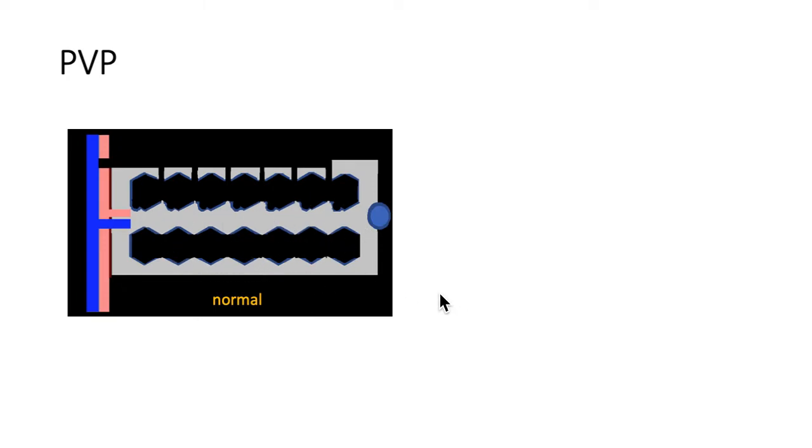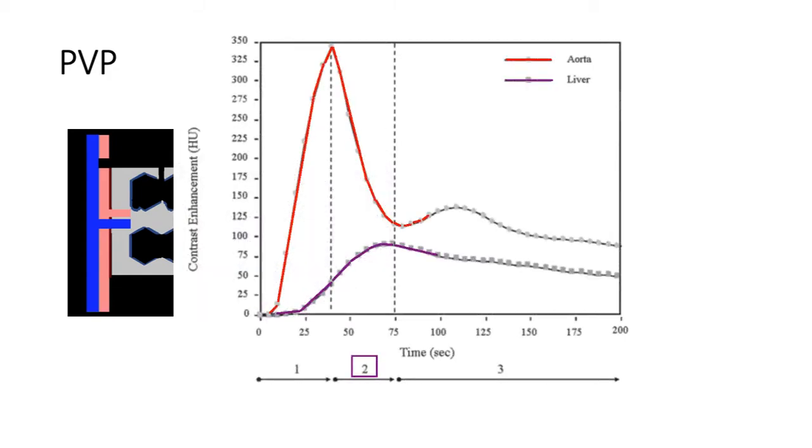So see here, maximally enhanced compared to the arterial phase. If we plot the liver enhancement over time, we see that the peak of enhancement of the liver is seen here at the portal venous phase. So between the 50 to 75th second corresponding to the portal venous phase.